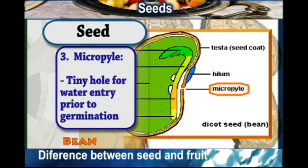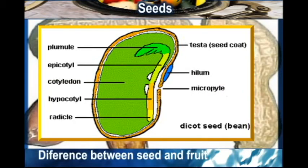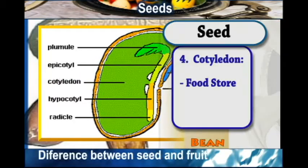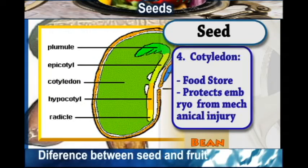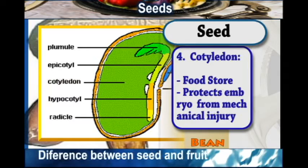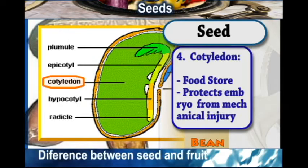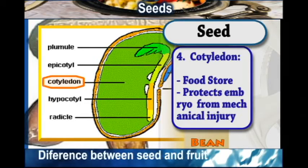Then we have the cotyledon. The cotyledon acts as a food store and it also protects the embryo from mechanical injury. We know of dicotyledon and monocotyledon plants — those cotyledons act as food stores and also protect the embryo from mechanical injuries.